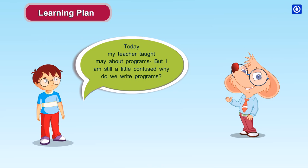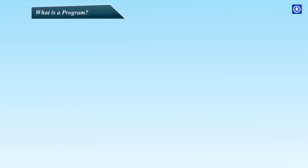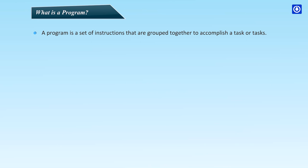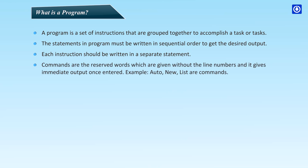Today my teacher taught me about programs, but I am still a little confused — why do we write programs? Anything you use on your computer has been written in some kind of computer program, so we need to write programs. A program is a set of instructions that are grouped together to accomplish a task or tasks. The statements in a program must be written in sequential order to get the desired output. Each instruction should be written in a separate statement.